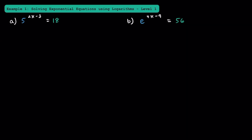In example 1, let's take a look at solving some exponential equations by using logarithms. For this first problem, we have 5 to the 2x minus 3 power is equal to 18. Keep in mind that this 2x minus 3 has to be equal to something that's less than 2, because if it was equal to 2, 5 to the second power would equal 25, and since 18 is less than 25, this 2x minus 3 must be less than 2. Our goal here is to solve for x, but we need to get it down from being in the exponent first.